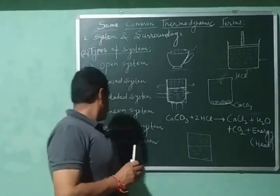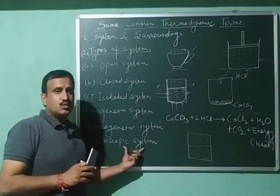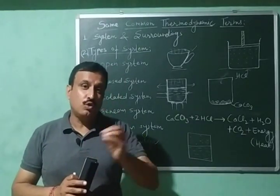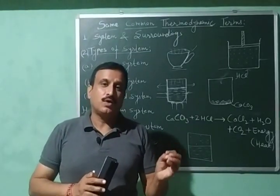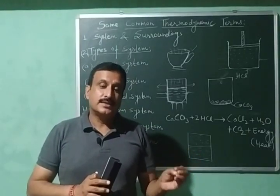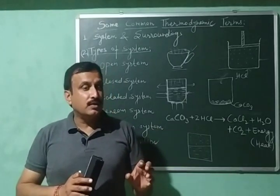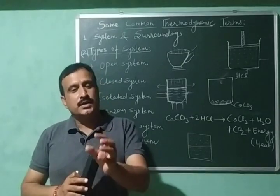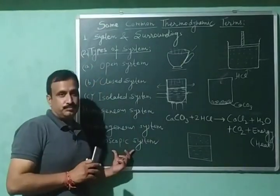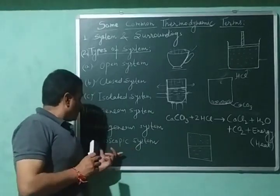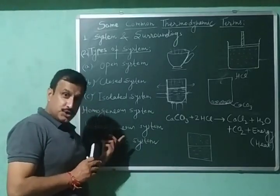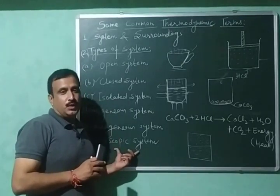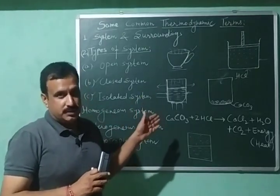Another type is the macroscopic system. A system composed of a large number of particles, or having a large quantity of substance, is called a macroscopic system. The properties associated with a macroscopic system are called macroscopic properties, which I discussed in my previous video.